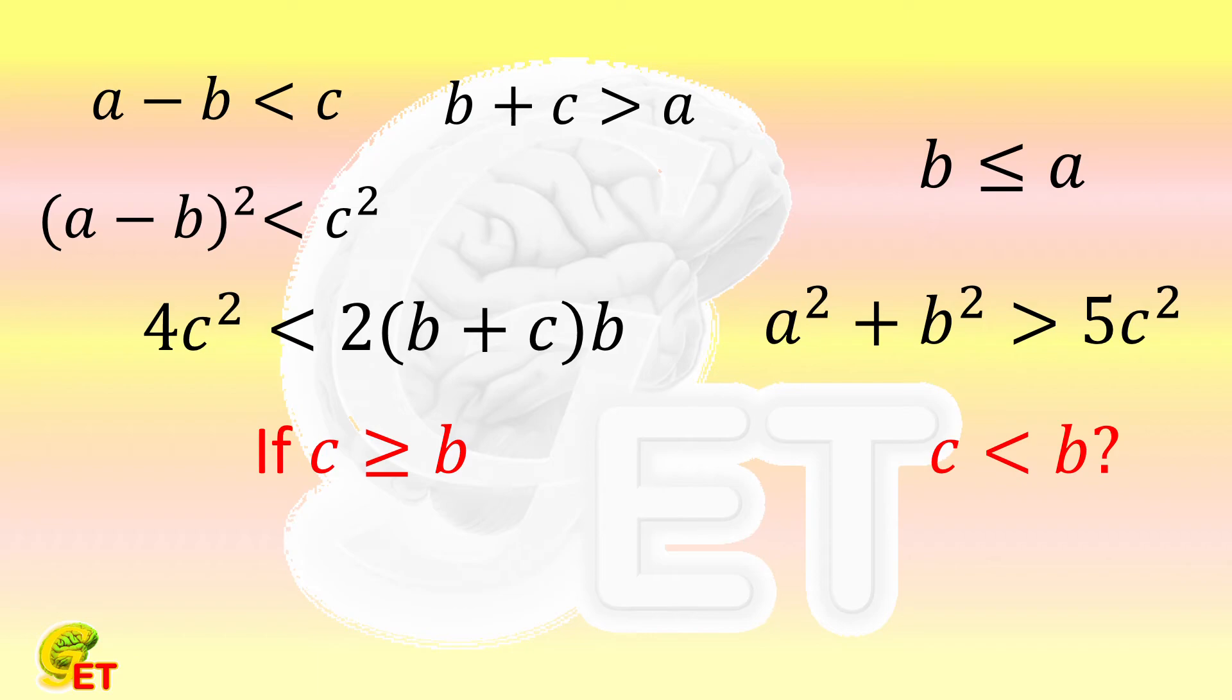Replacing all b on the right side of the inequality with c, we get 2(c + c)c. Since b and c are both positive numbers, this result cannot be smaller than the original one. And this result is exactly equal to 4c².